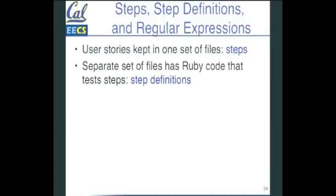So here's the magic here. The user stories are kept in one or more sets of files. These are called step files. So it can series of the steps. There's a separate set of files that has the Ruby code to test these steps. These are step definitions. So we have step files and step definitions.